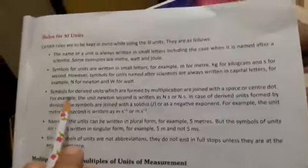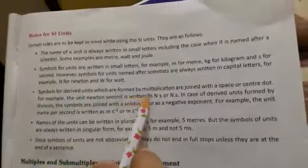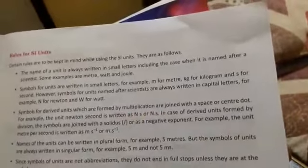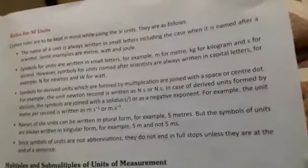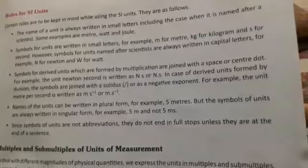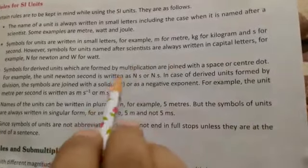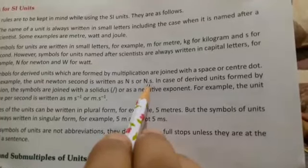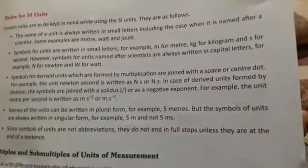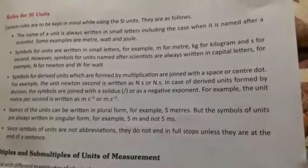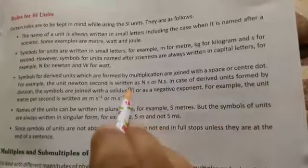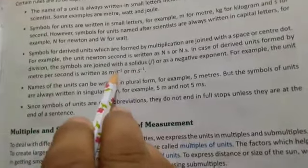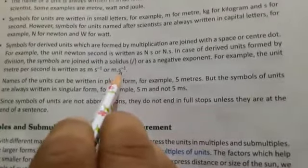Third point is symbols for derived units which are formed by multiplication are joined with a space or centre dot. For example, the unit Newton second is written as N S or N dot S. In case of derived units formed by division, the symbols are joined with a slash symbol or as a negative exponent. For example, the unit meter per second is written as m/s or m dot s power minus 1.